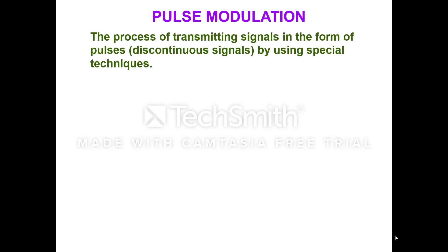Hello everyone. In the last lecture we had discussed pulse code modulation. In this lecture we will be discussing pulse modulation. The process of transmitting signals in the form of pulses by using special techniques is called as pulse modulation. In short, the carrier wave used in this modulation technique is actually in the form of pulses or a pulse train.